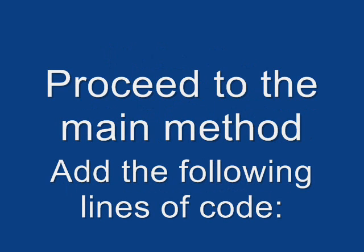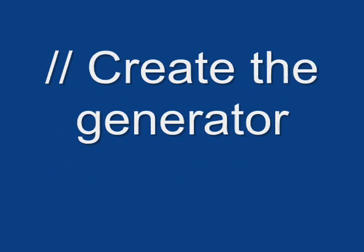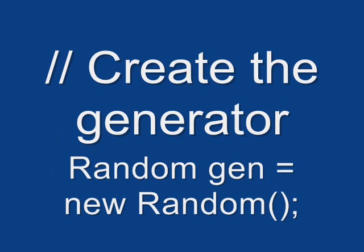All right, now go down to the main method and add the following lines of code. First, add the comment, create the generator, with a line of code underneath it, random with a capital R, gen, G-E-N, equals new capital R random, open paren, close paren, semicolon.